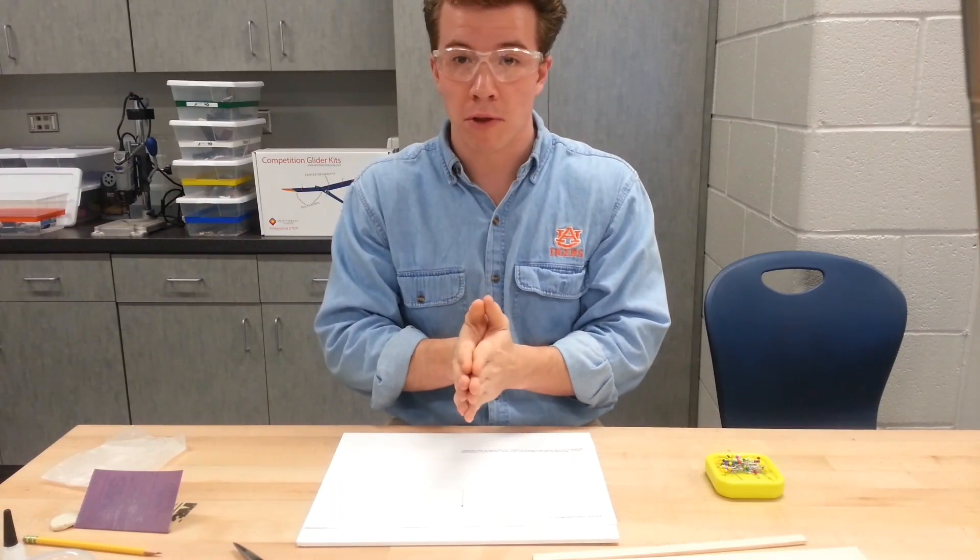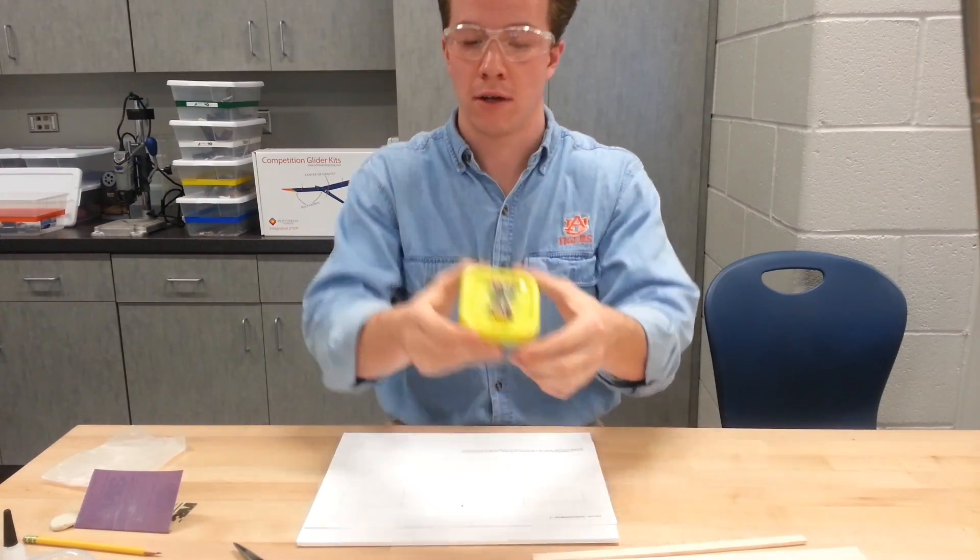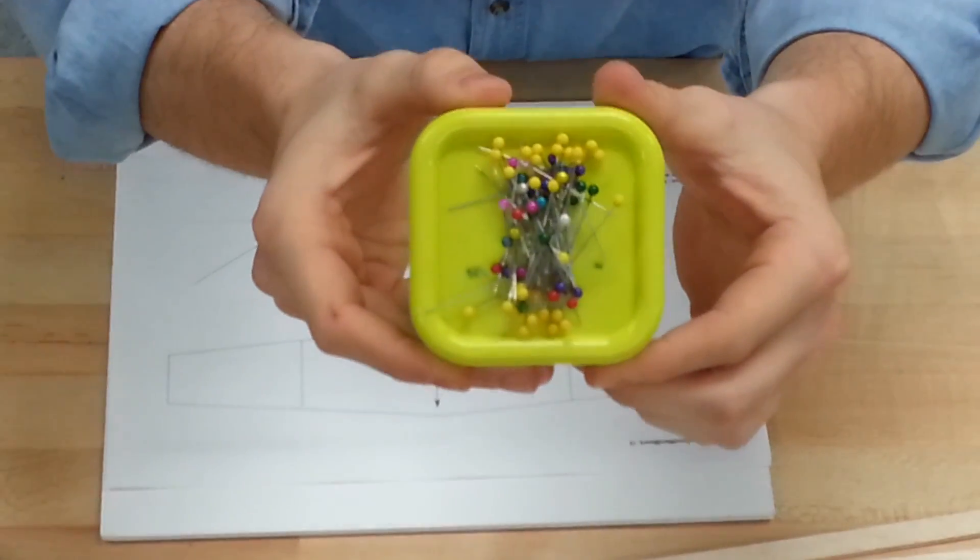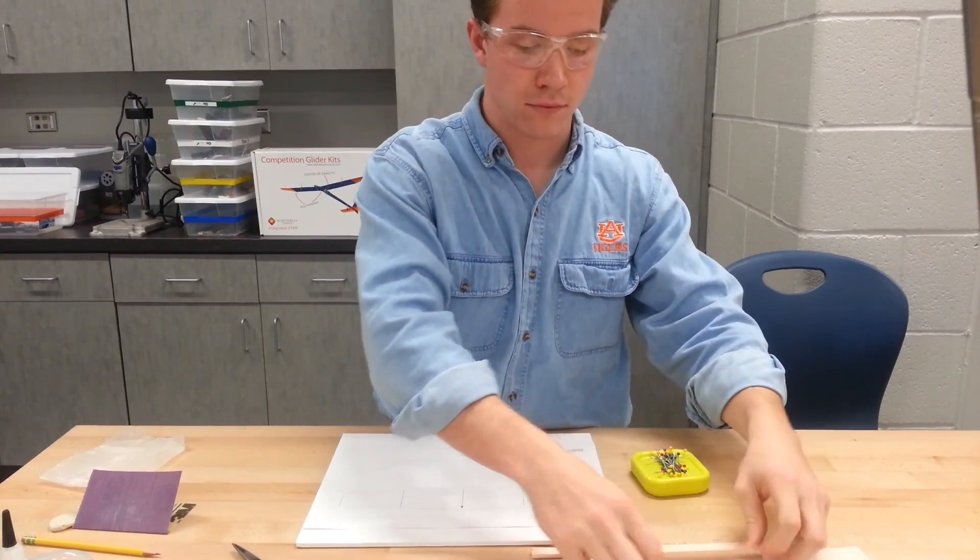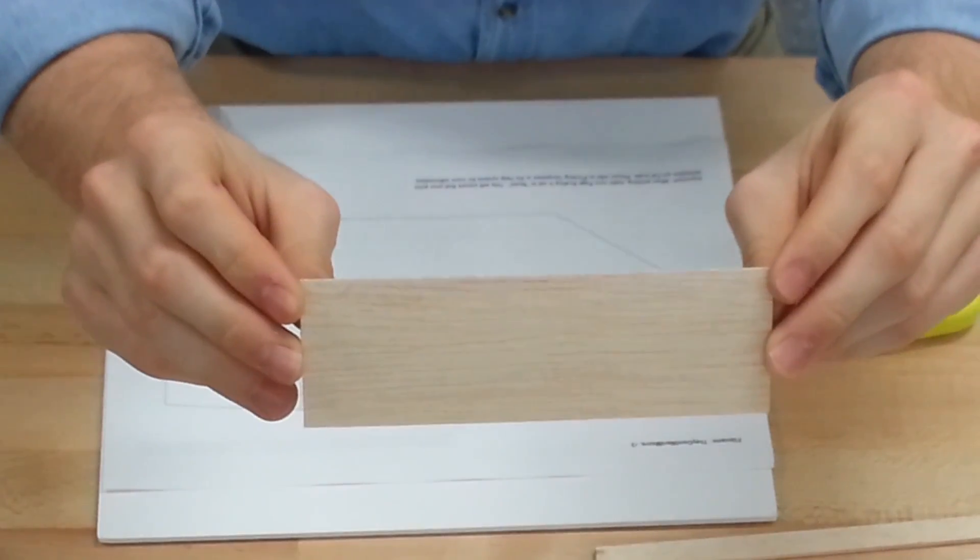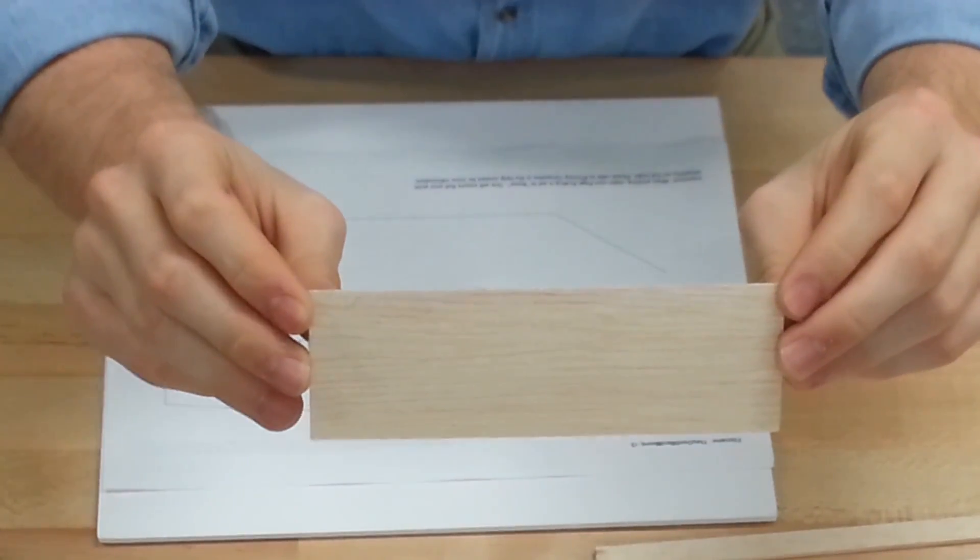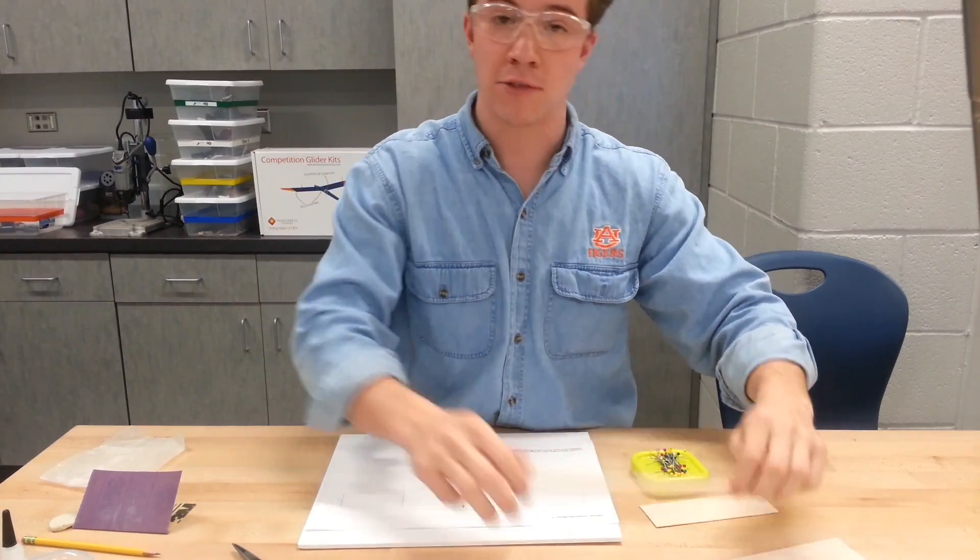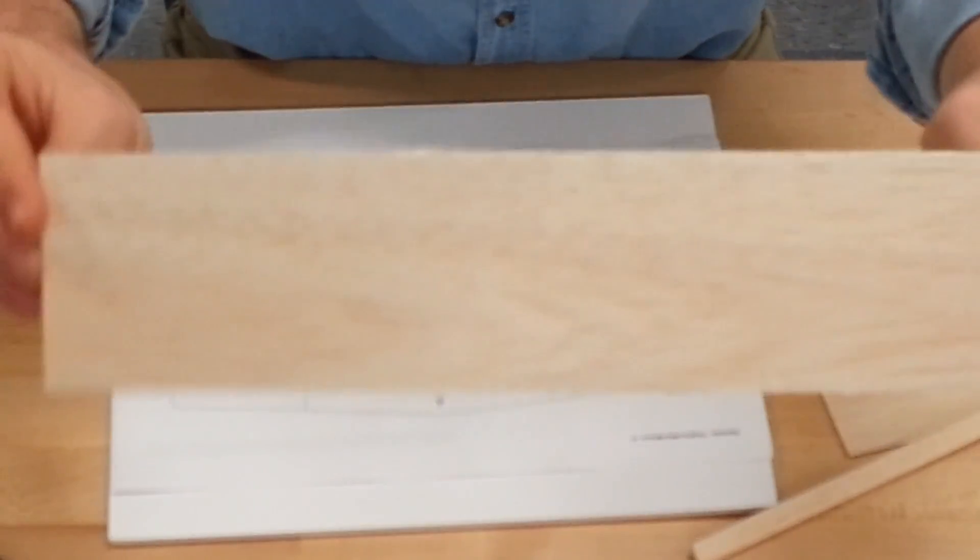Now, we need a couple of things before we get started. Our pins and pin magnet. Our piece for our horizontal stabilizer and our vertical stabilizer. A piece for our fuselage. And our piece for our wings.